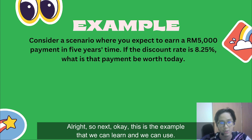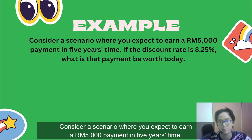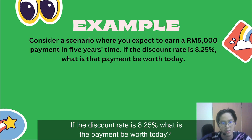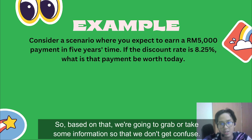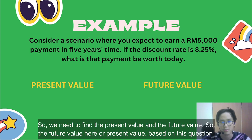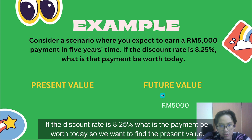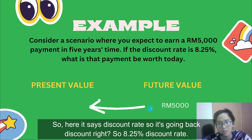Here is an example: consider a scenario where you expect to earn a $5,000 payment in five years' time. If the discount rate is 8.25%, what is the payment worth today? From the question, the future value is $5,000. We want to find the present value. The discount rate is 8.25%, meaning we are working backwards from future value to find present value.